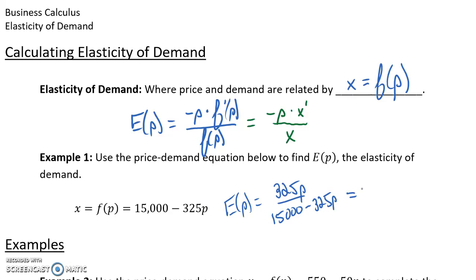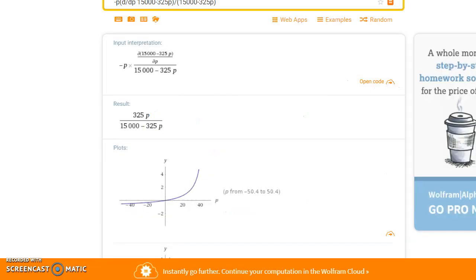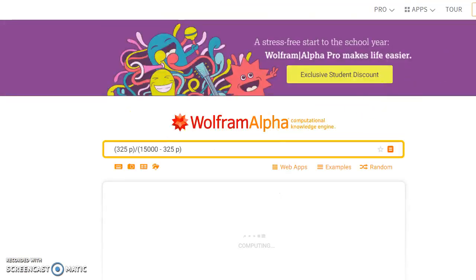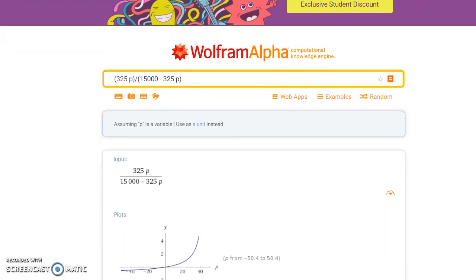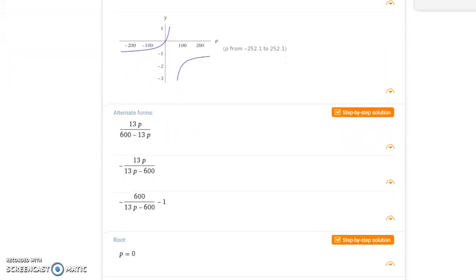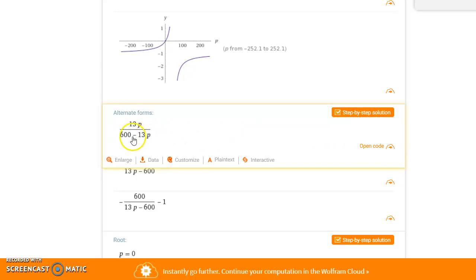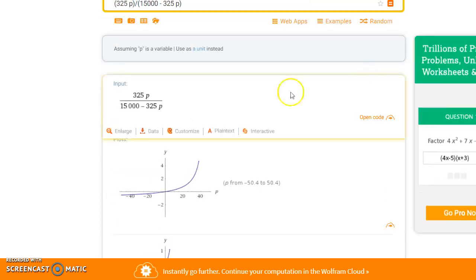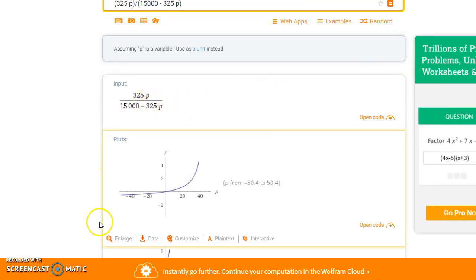So this function could also be represented in a slightly reduced form as 13P over 600 minus 13P. We won't be concerned as much about that reduced form, but if we were to click on this result, we would see that we get these alternate forms, one of which is that reduced version. So for our purposes, we can either use that reduced version or use this unreduced version.